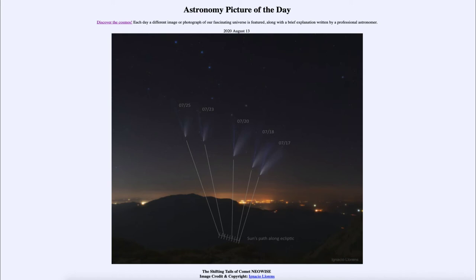When you pull up the image, you will see those five images of the comet with the dates, and you will see the sun's path — where the sun would have been down below. This shows where the sun would have been on each of those days, and we can see that the sun would have slowly moved.